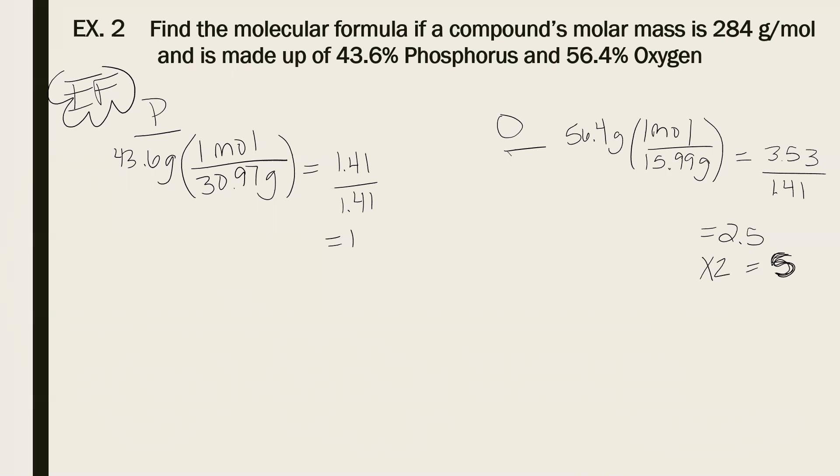If I do it times 2, I get 5. That's a whole number. Then I also have to do it over here. 1 times 2 is 2. So those are now going to give me my empirical formula. So my empirical formula is P2O5 because I just use the order that I am given.